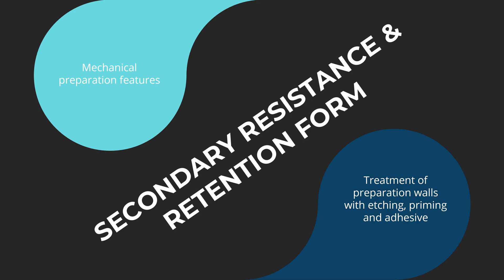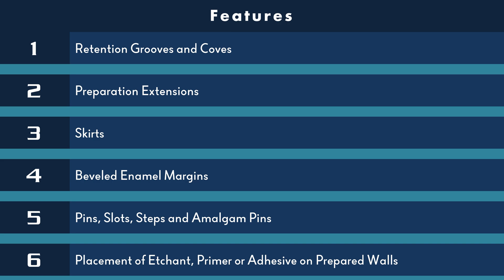We can broadly divide secondary features into two categories: mechanical preparation features, and chemical features like preparation of enamel walls by etching, priming, and adhesion application. The mechanical features to remember are: retention grooves and coves, preparation extension, skirt preparation, beveled enamel margin, pins, slots, steps, and amalgam pins. The chemical feature is the placement of etching, primer, or adhesive on prepared walls. Let's see each one by one.